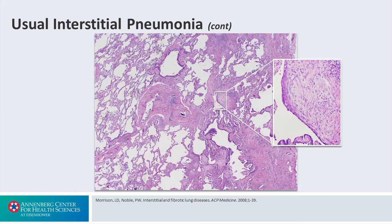And in the center, when we do the build on this slide, you see what's called a fibroblastic foci. These are the fibroblasts lined in parallel — they are the leading edge of the extracellular matrix. This is where the scar tissue gets deposited.